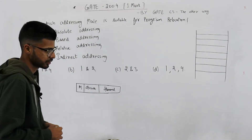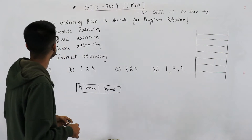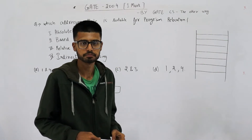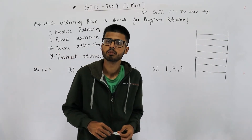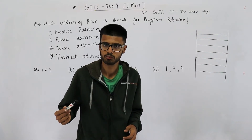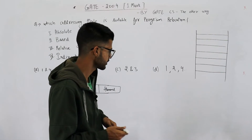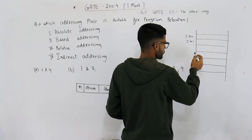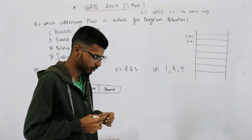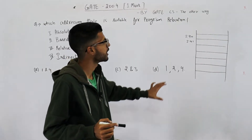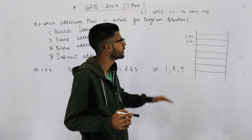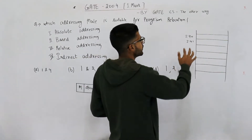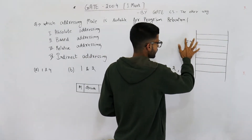This is a GATE 2004 question for one mark. The question asks: which addressing mode is suitable for program relocation? Program relocation means when the operating system decides to move your program around in RAM. For example, earlier it was loaded at address 240, 241, 242, 243, and now the OS decides that space must be given to some other program and this program must be moved somewhere else.